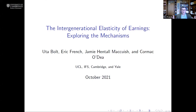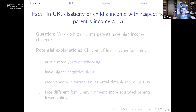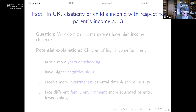Thank you very much for coming and allowing me to share some of my recent research on the intergenerational elasticity of earnings, done with current and former PhD students. In the United Kingdom, on average, parents who have income 1% above average have children whose earnings are about 0.3% above average. We refer to that as the intergenerational elasticity of earnings, approximately 0.3. The question is why.